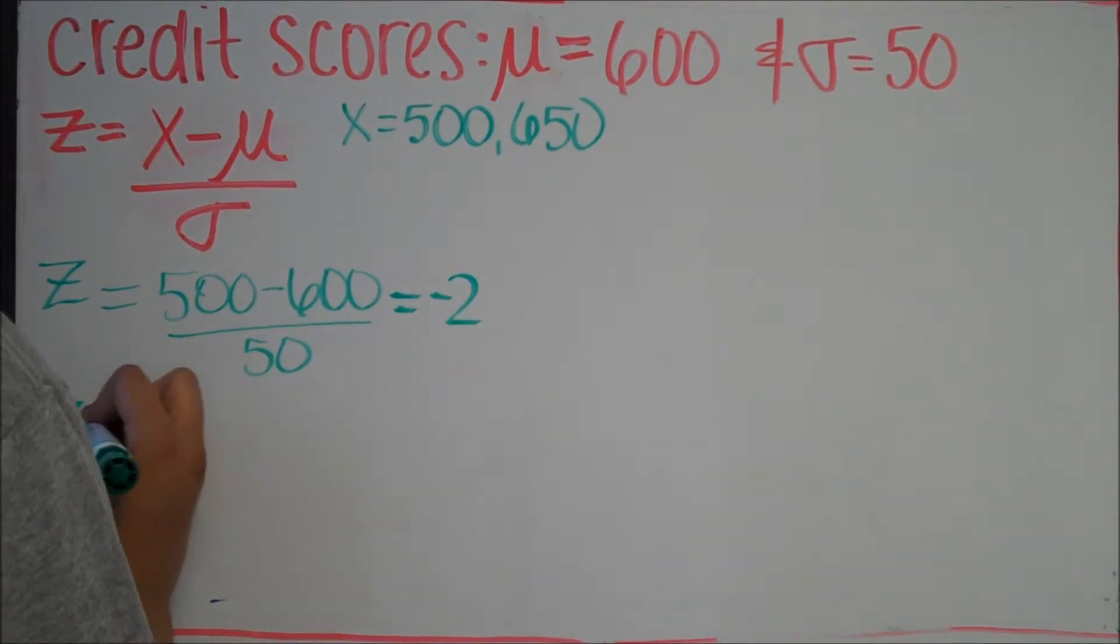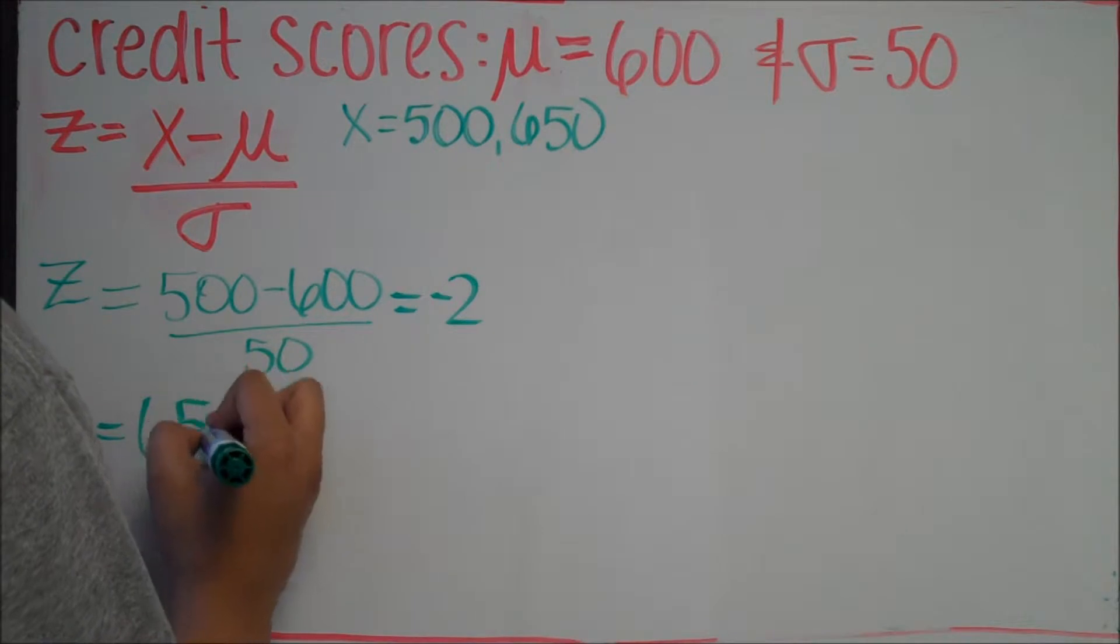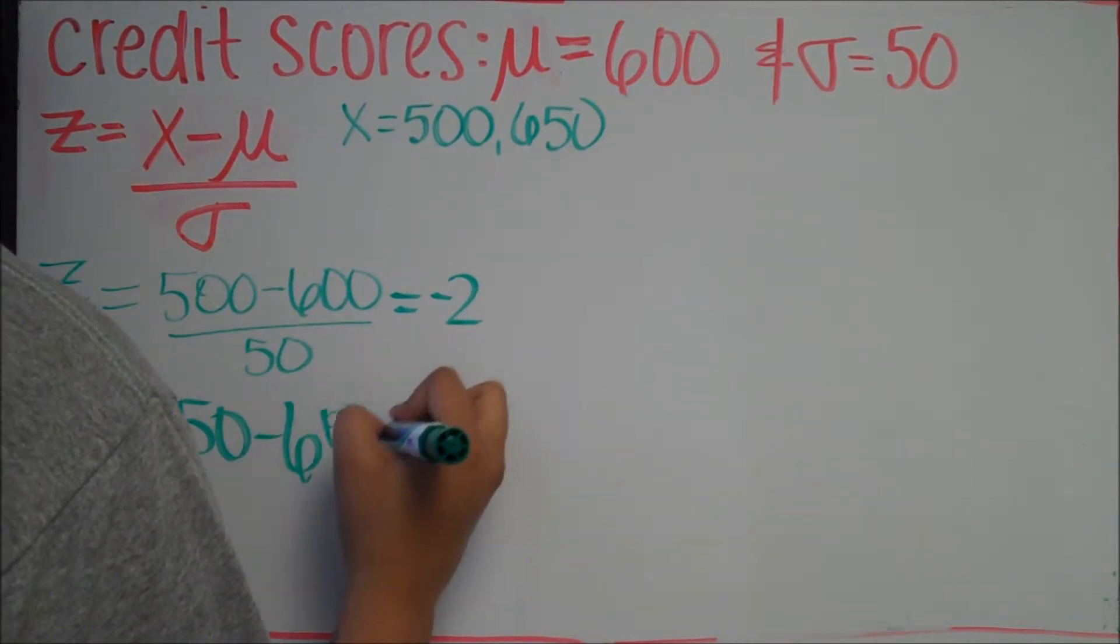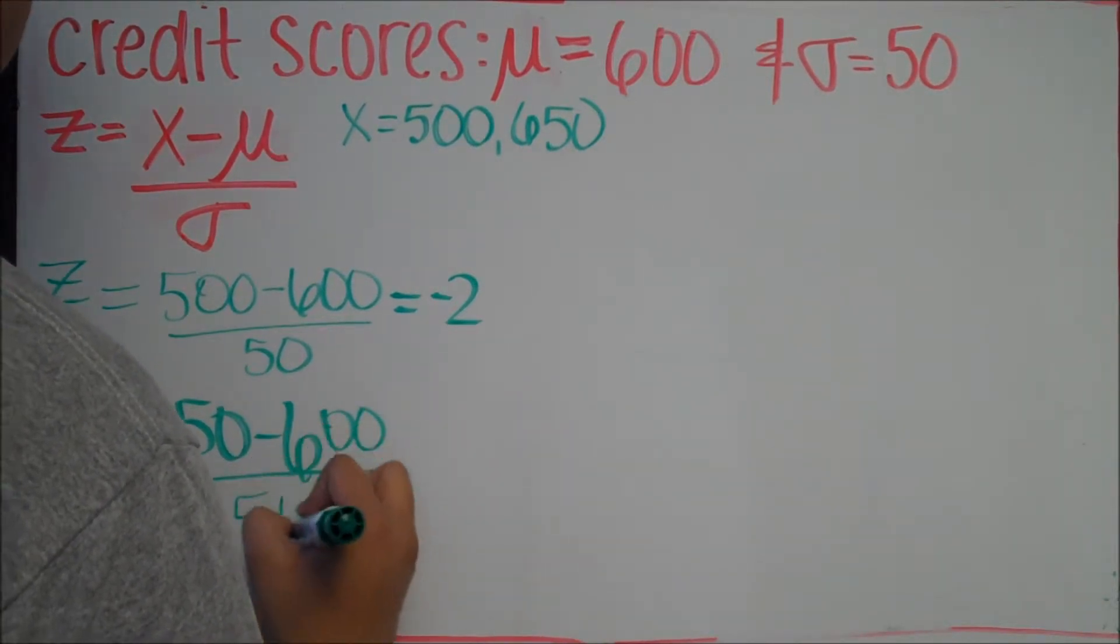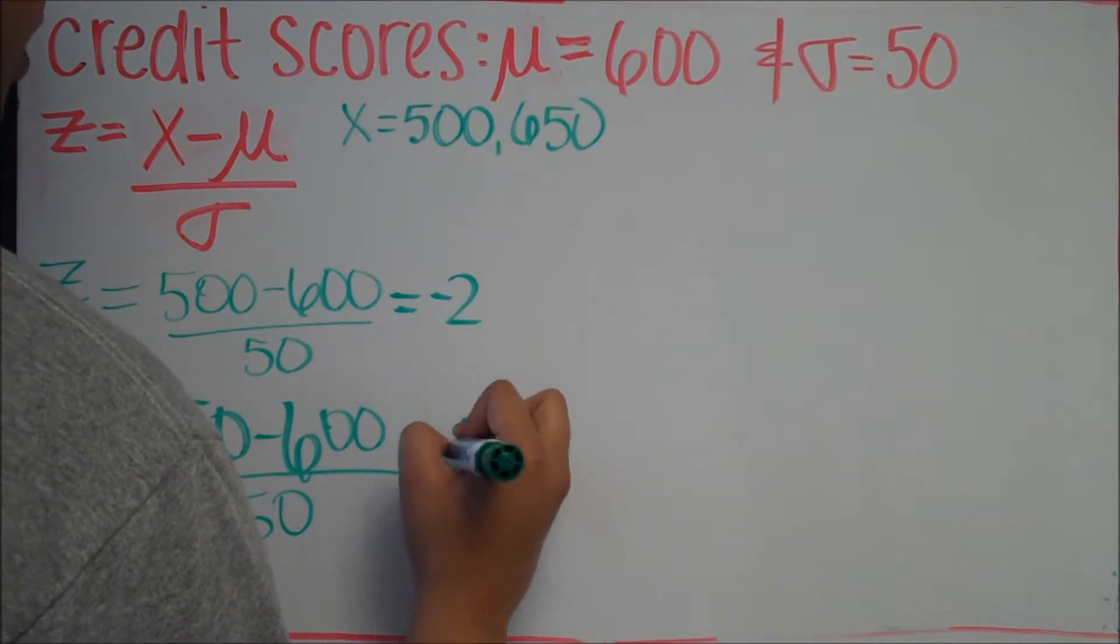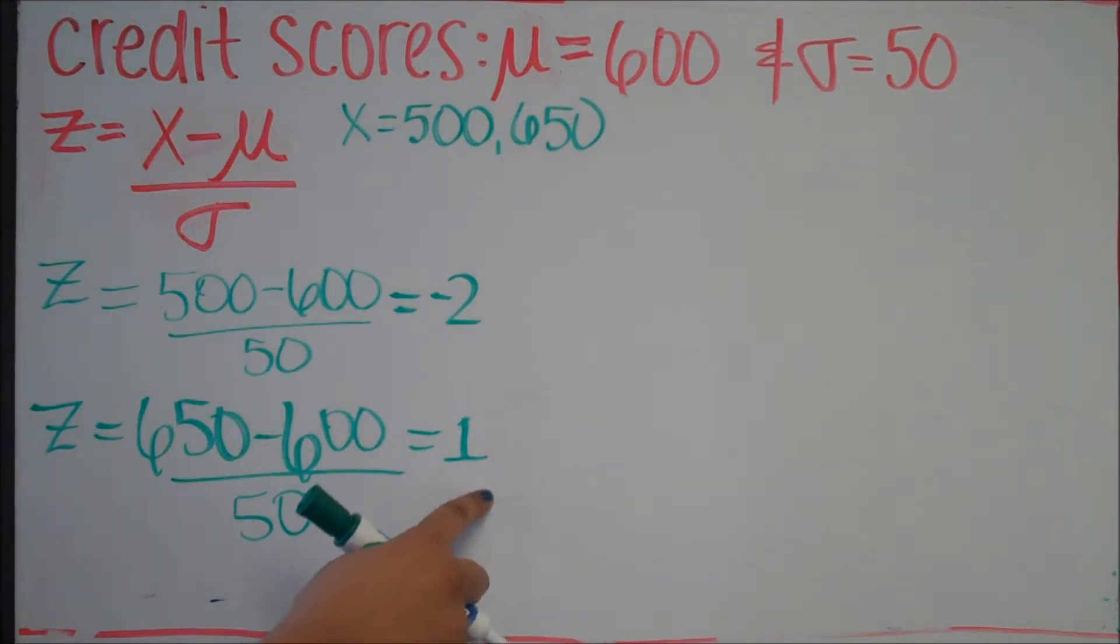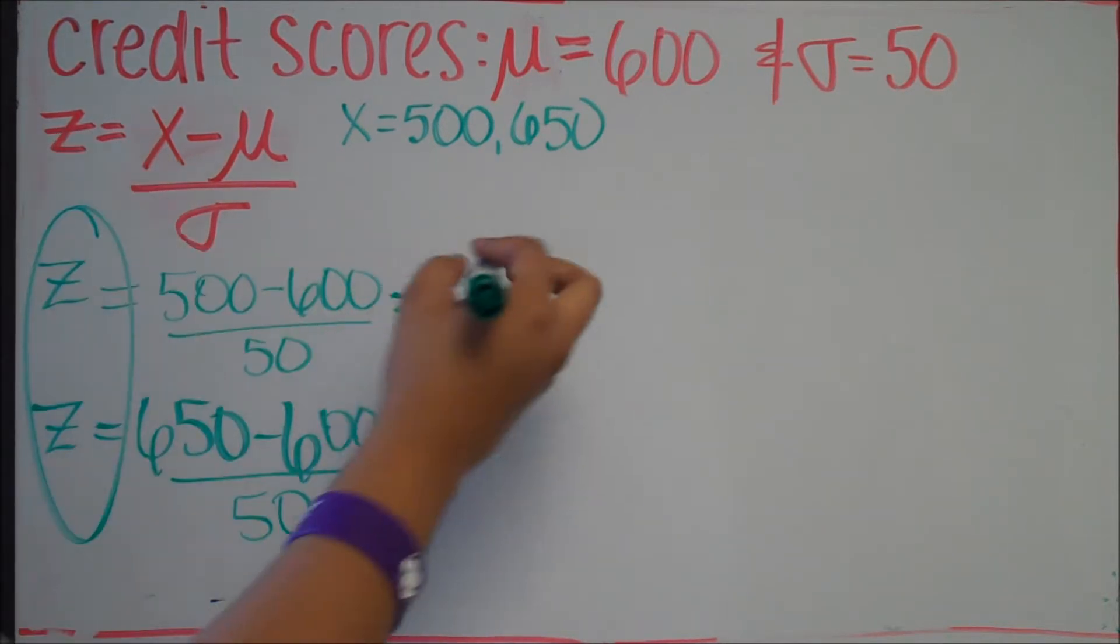The second one: z equals 650 minus 600 divided by 50. And you should get 1 for that answer. So these are your z-scores. They've been standardized so that we can graph them.